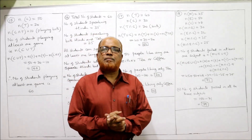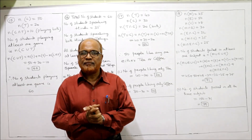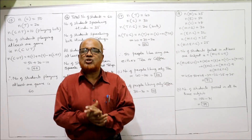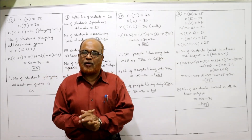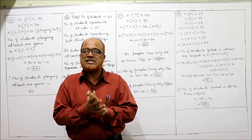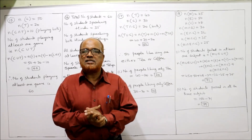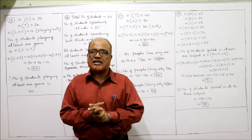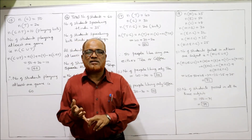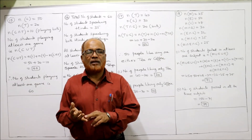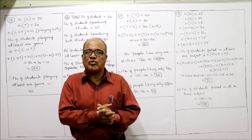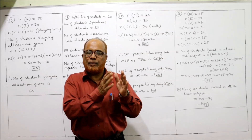I've explained set theory in detail across several videos. The first video covered the meaning of the term 'set', elements of a set, and representation in roster form and set builder form. Then different types of sets — finite, infinite, null set, singleton set, equal set, equivalent set, proper set, subset, universal set. Then set operations: union, intersection, and complement. Three exercises — 1A, 1B, and 1C — were completed.